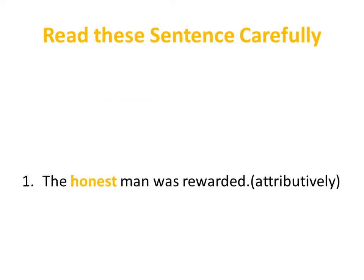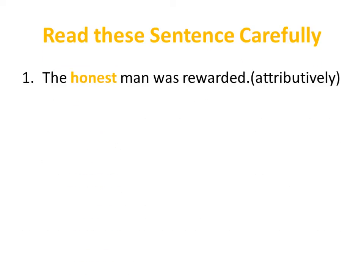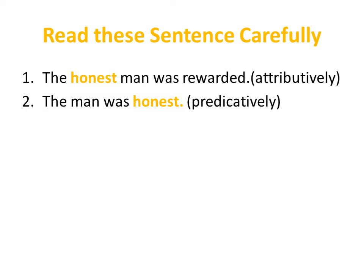Read these sentences carefully. One: 'The honest man was rewarded.' Two: 'The man was honest.' The same word has been used as an adjective in both, but the position has changed. When an adjective is used as a subject, it is used attributively. When it is used as a predicate, it is used predicatively.